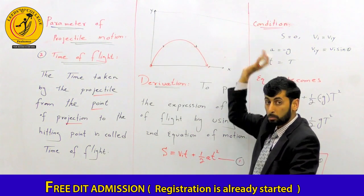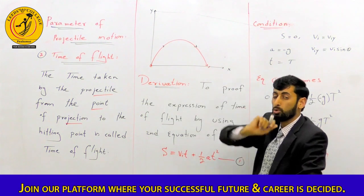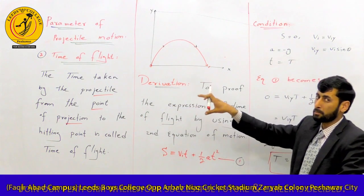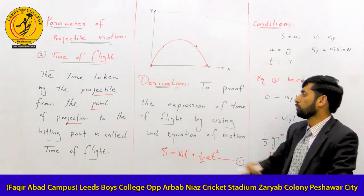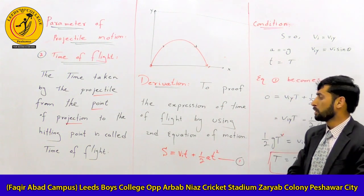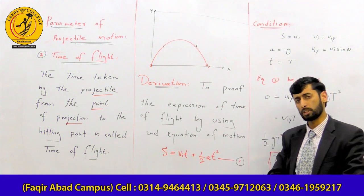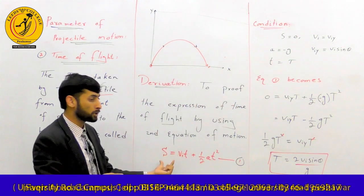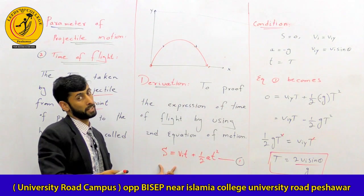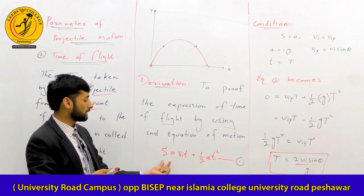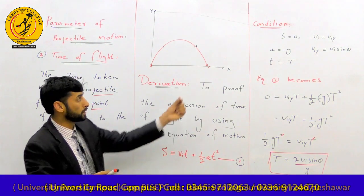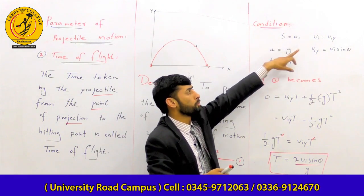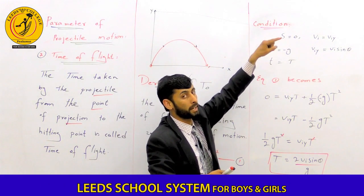We will now derive the expression for time of flight. We will use the second equation of motion. The condition for derivation is that the height h is equal to zero, meaning the projectile returns to the same level as projection.